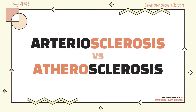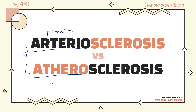Let's differentiate two similar terms: arteriosclerosis and atherosclerosis. Arteriosclerosis is a general term for when arteries are hardened or thickened, leading to poor blood circulation. Atherosclerosis is a specific type of arteriosclerosis resulting from plaque buildup.